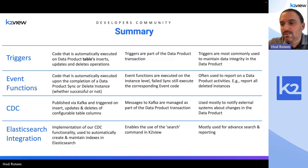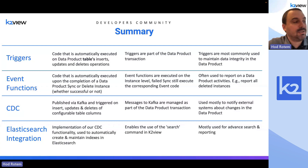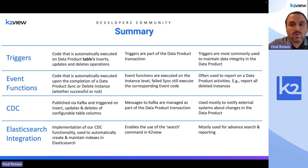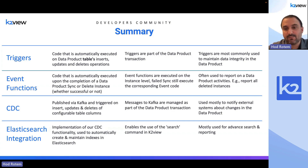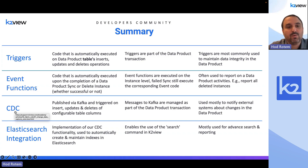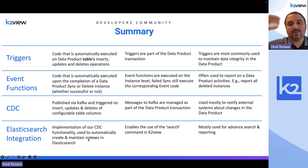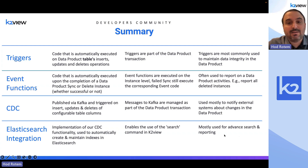We're four minutes to the hour, so let me run a quick summary. We will share links to all four topics discussed so you can go directly to our support site or documentation and learn more. We talked about triggers and event triggers, which are mostly used to maintain data integrity across the data product — executed on inserts, updates, or deletes that happen to the table the trigger is defined on. Event functions or event triggers are executed on the entire logical unit instance, whether synchronization was successful, failed, or the delete was successful. We talked about CDC, which is meant to keep external systems up to date with data that changes in K2View. And Elasticsearch is one of its use cases — there's built-in functionality that takes CDC event data and synchronizes it into Elasticsearch, enabling advanced search and reporting capabilities.